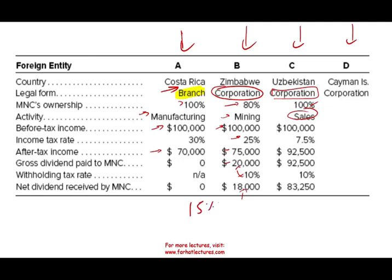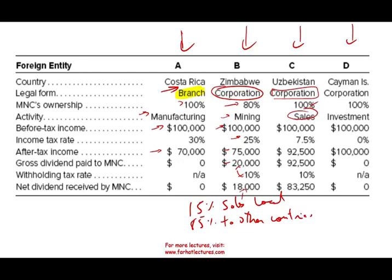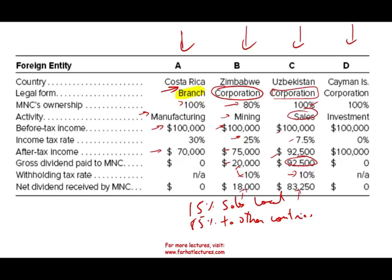The Uzbekistani operation is also a corporation. The multinational owns 100% and they're in sales. Notably, 15% of their sales is local and 85% goes to other countries. Their income before tax is $100,000. The income tax rate is 7.5%, so income after tax is $92,000. They paid everything as a dividend to the US company. Uzbekistan withholds 10%, so the net dividend received is $83,250. The Cayman Island operation is 100% owned by the US. The only activity is investment, which is passive income. Pre-tax income is $100,000, they paid no taxes, after-tax income is $100,000, and they paid no dividend with no withholding rate.